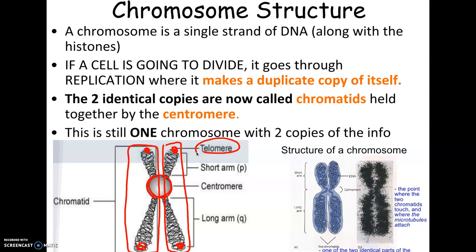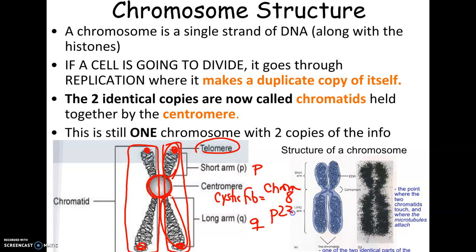The top arms are always called P and the bottom are Q. So on a chromosome, this would be a P arm and this would be a Q arm. Many genetic disorders — thousands of them — have a known exact location. For example, you might look up a disorder and find it's on chromosome 8 at position P23, which tells you it's on pair number 8, on arm P at spot 23. We actually refer to these top arms as P and the bottom ones as Q.